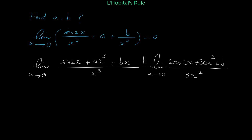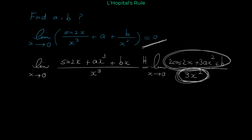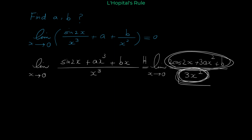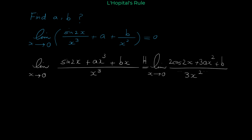As x approaches 0, if we plug in 0 for x, the denominator 3x squared becomes 0. Because the denominator is 0 and the limit exists, the numerator must also be 0. If the numerator were non-zero when the denominator is 0, we would get something like 2 over 0, which goes to infinity — meaning the limit would not exist. So the numerator must equal 0 when x equals 0.